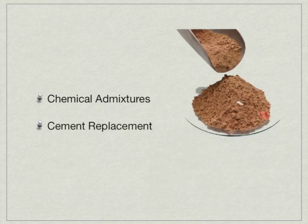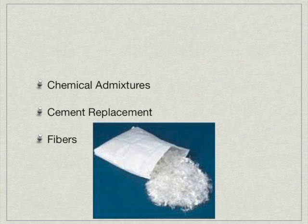There are admixtures to fight corrosion and there are admixtures to reduce shrinkage. You may also find a supplemental cementitious material, such as slag, fly ash, or metakaolin. You may also find fibers in concrete. Fibers are used to reduce the amount of plastic shrinkage cracking in concrete. Plastic shrinkage cracking is cracking that occurs on the surface of concrete within the first two to eight hours of set.